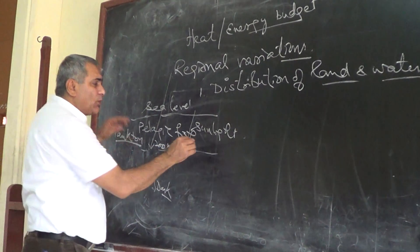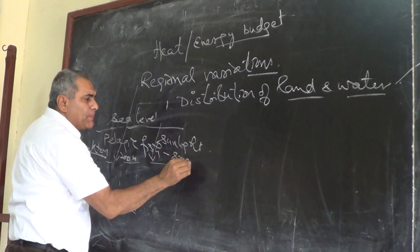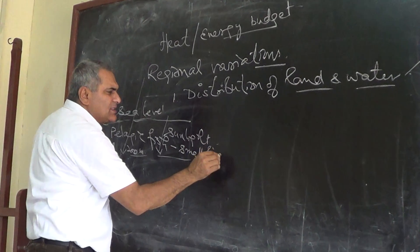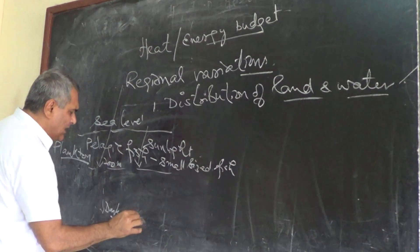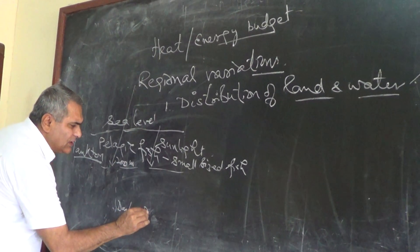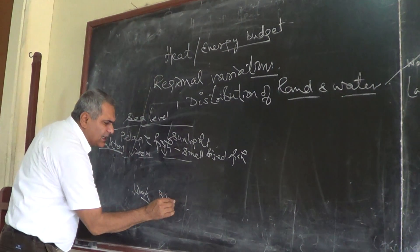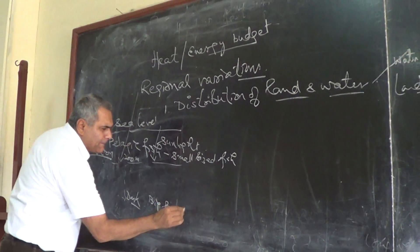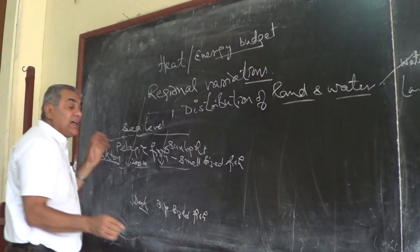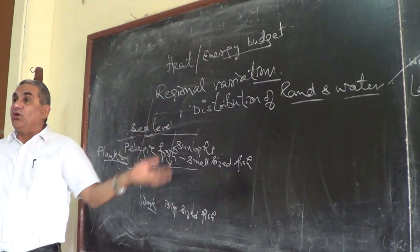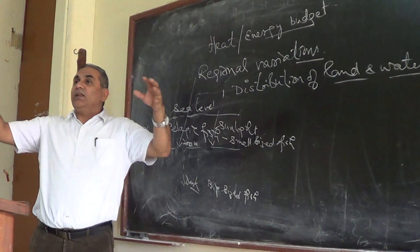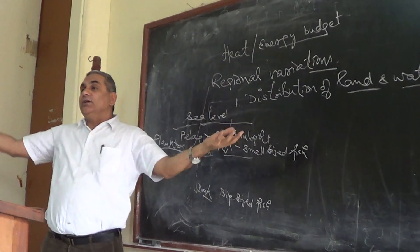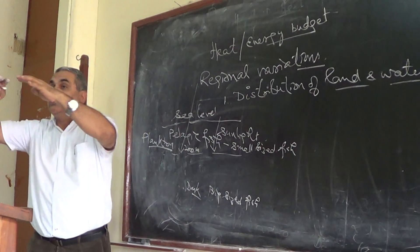Pelagic fish means small sized fish. These fish generally survive in large schools, and in the dark depths we have the big sized fish. Small sized fish live near the shore in a group - hundreds, thousands, lakhs, millions, billions of fish generally found in one school.